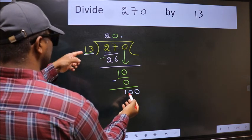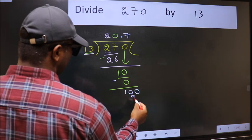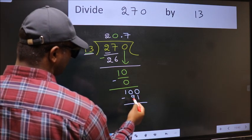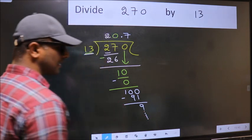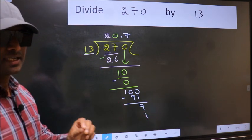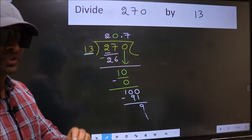A number close to 100 in 13 table is 13 times 7, 91. Now we should subtract. We get 9. And you continue the division. I am not doing that. Did you understand where the mistake happens? You should not do that mistake.